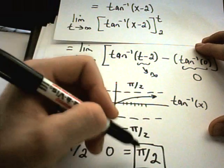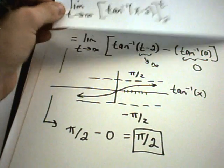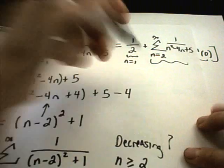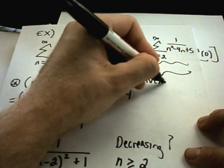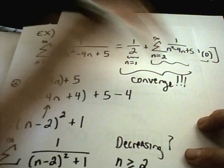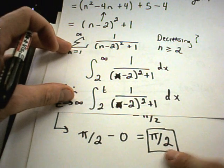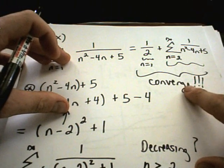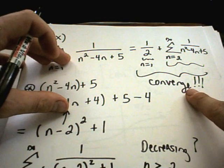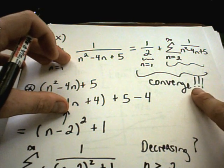Well, our improper integral converges. We can now conclude, therefore, that the original integral must also converge. Again, you have to be careful. The improper integral does converge to pi over 2. That does not at all mean that the original series converges to pi over 2. All we know is that it converges. We still don't know to what number.